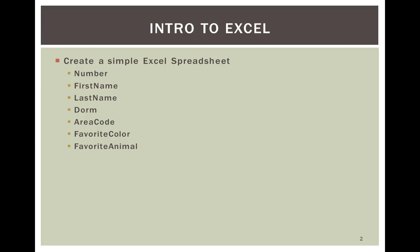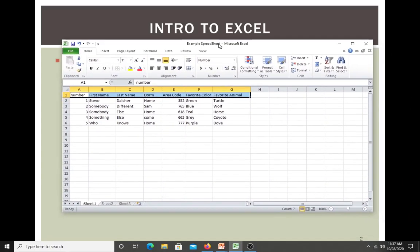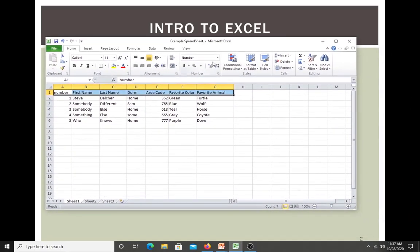Across the top headers, put an entry for number, first name, last name, dorm, area code, favorite color, and favorite animal. In class you'd get with other members and collect data for five or six different people to have real data to work with. Since we don't have that, I'm going to bring up an example worksheet. So there we go.